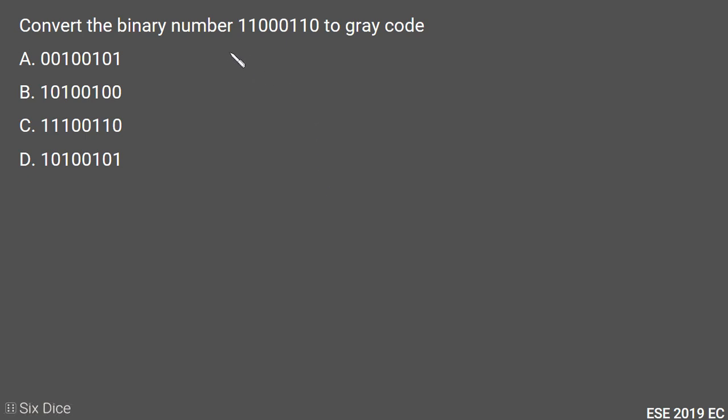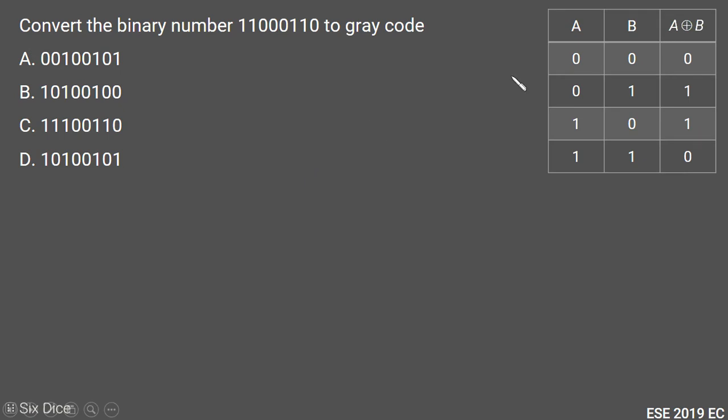Okay, in this question we need to convert the given binary number into gray code. So first we write down the truth table for XOR gate. In XOR gate, we will get only one as output when both of the inputs are different.